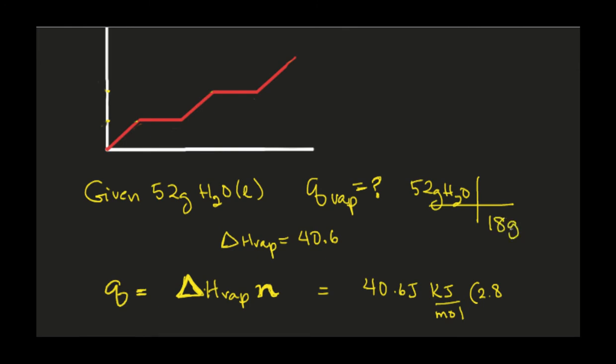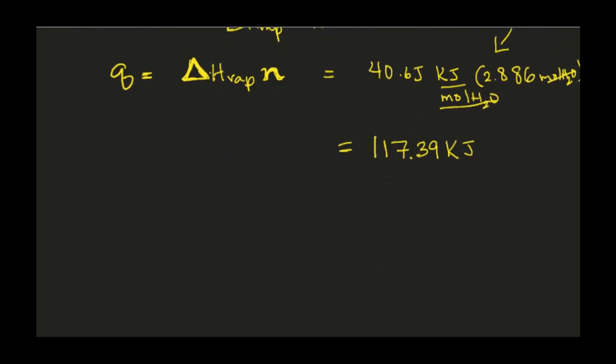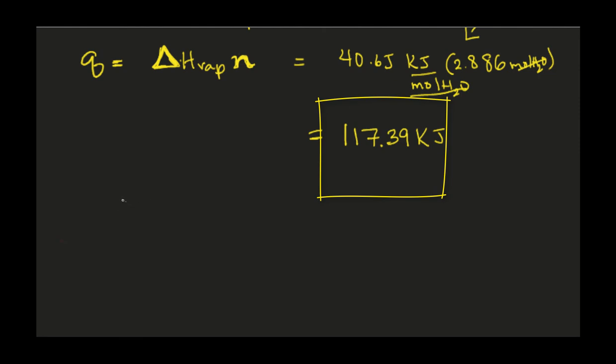So if we take 40.67 kilojoules per mole and multiply it by that 2.8—and all you did there was take the 52 grams of H2O and use your molar mass of 18 grams, right? 2.8, good. And then one mole of H2O gave you this number I'm writing in here: 117.39. So this is moles of H2O, and the moles cancel, leaving us just kilojoules, which is what we want for heat or enthalpy.